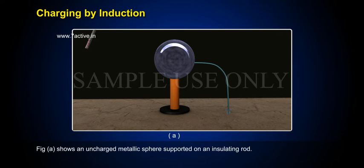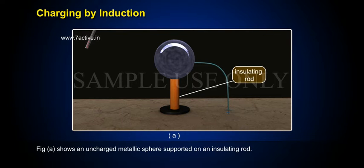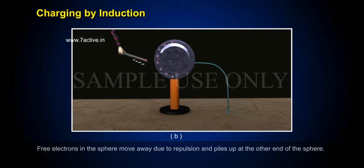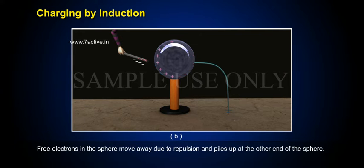Figure A shows an uncharged metallic sphere supported on an insulating rod. A negatively charged plastic rod is brought close to the sphere. Free electrons in the sphere move away due to repulsion and pile up at the other end of the sphere.